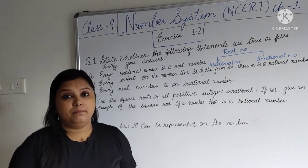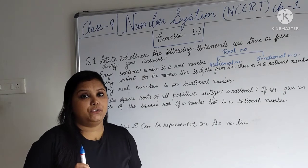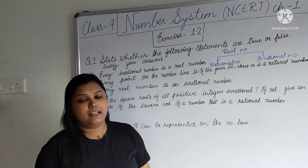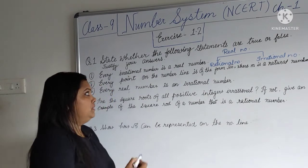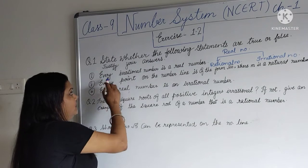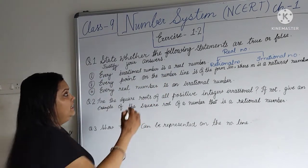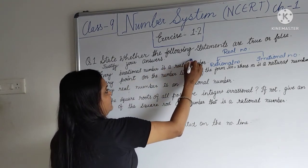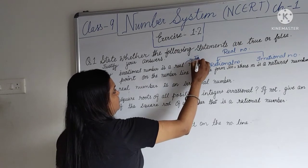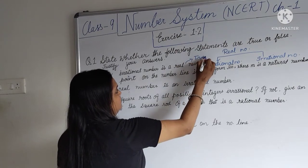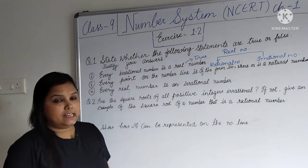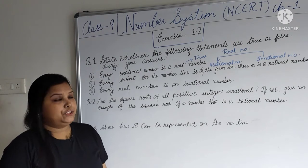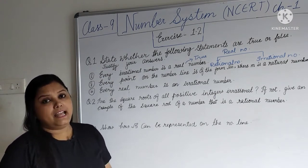Real numbers are the collection of rational numbers as well as irrational numbers. So this statement is clearly TRUE. You can give the reason as: real numbers are the collection of rational numbers and irrational numbers.